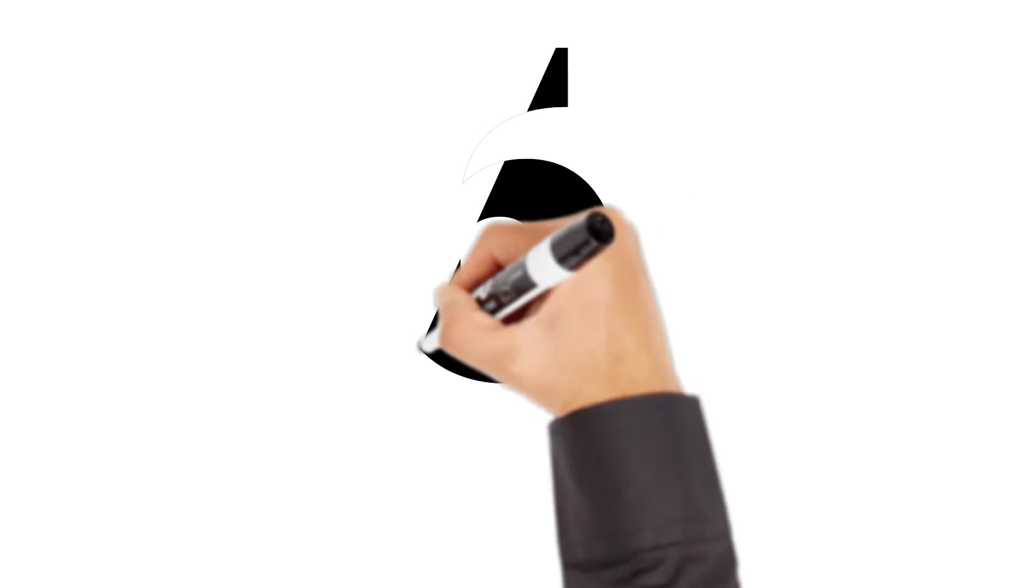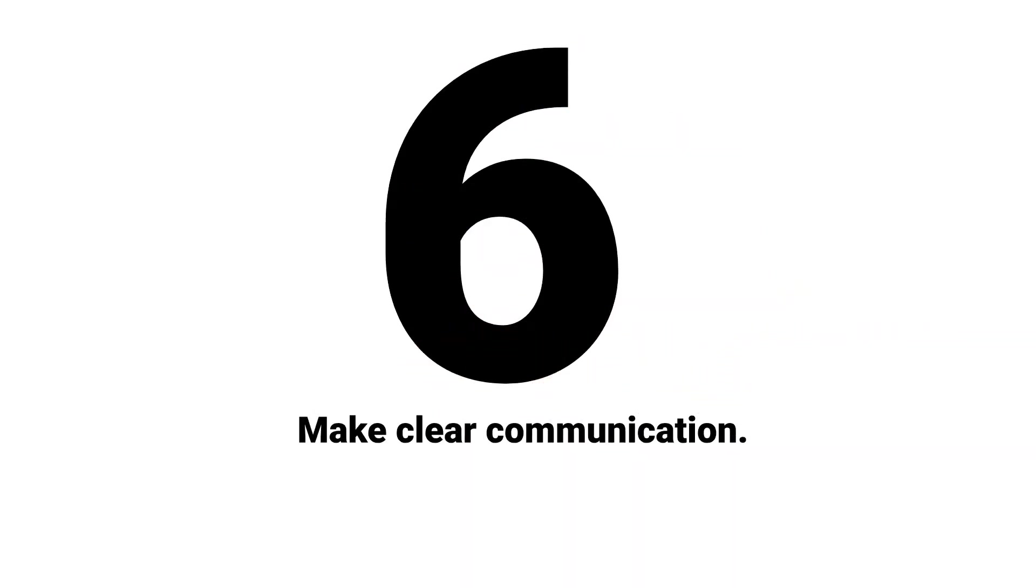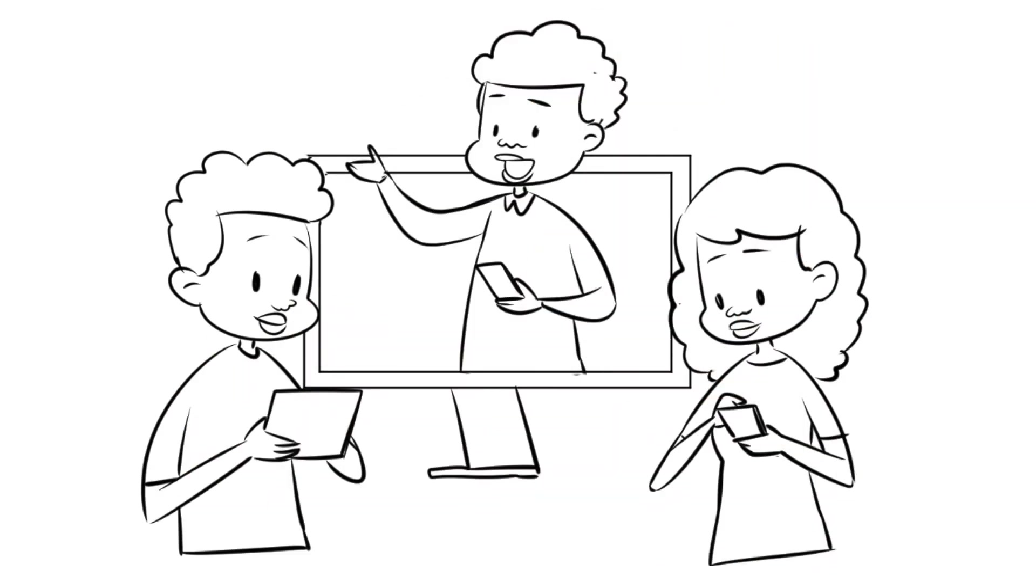Sixth one is to make clear communication with all the project stakeholders and bring a common understanding among all the functions. This doesn't just mean establishing a communication plan and delivering regular updates. It means talking to and listening to everyone involved in the project.